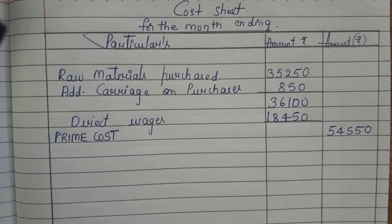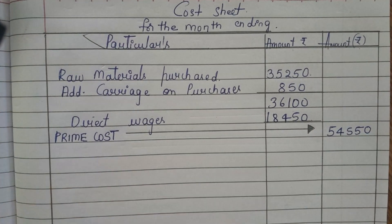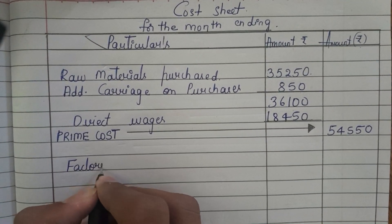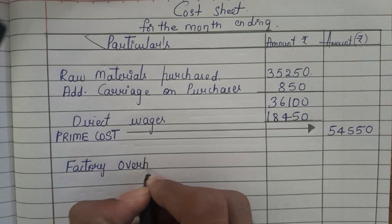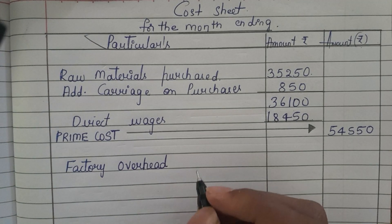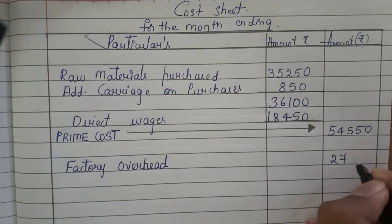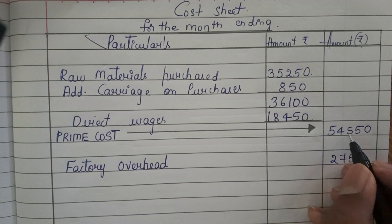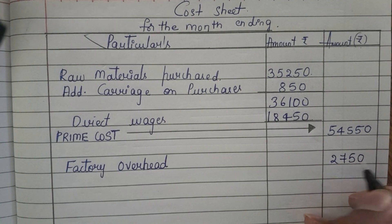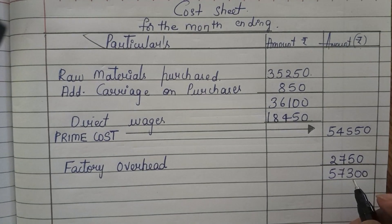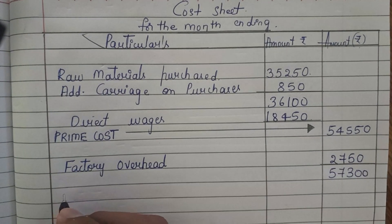Our first procedure to find the prime cost is over. Next, we need to add all the factory overheads. In the question, factory overheads are directly given as 2,750. Adding 54,550 plus 2,750, we get 57,300.